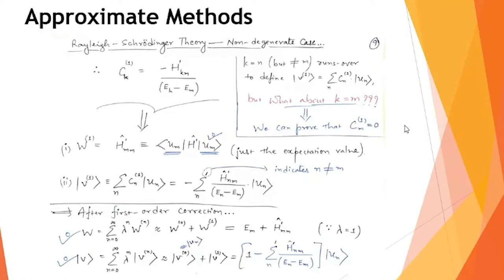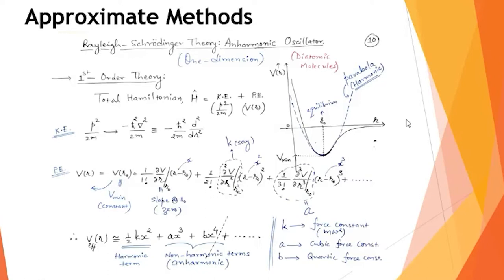We now apply this theory to a practical problem. Today we start with the anharmonic oscillator and investigate how first-order perturbation theory can be useful. Before doing calculations, we should recognize where such anharmonic oscillators can actually be observed in real systems.